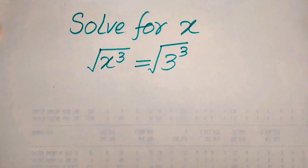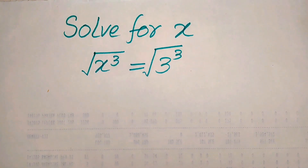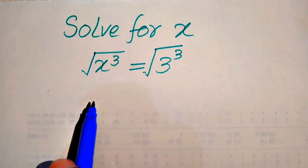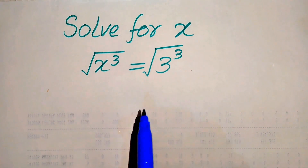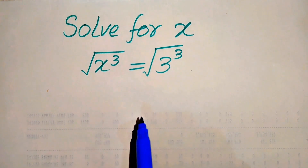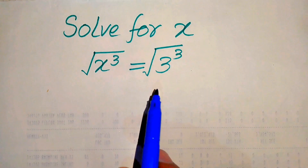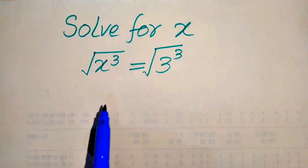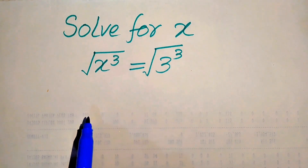Hello everyone. How to solve this problem for the values of x: if we have x cubed, and its whole square root, equals 3 cubed and its whole square root. We find all the roots of this equation. This is a cubic equation, which means it has three roots, so we will find all three of them.